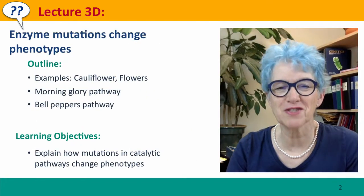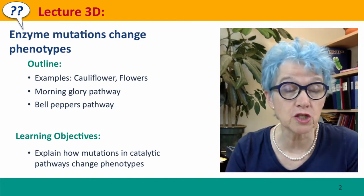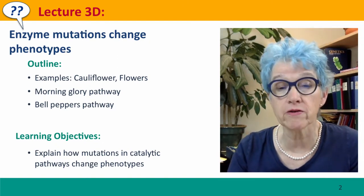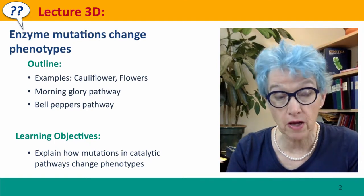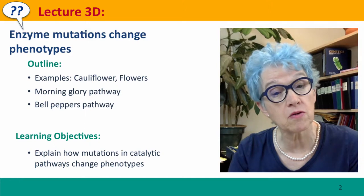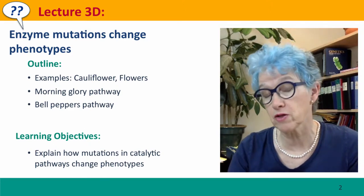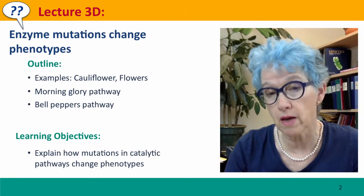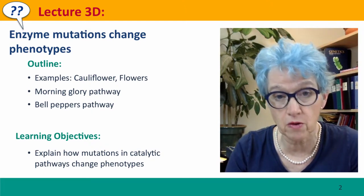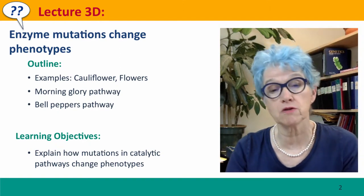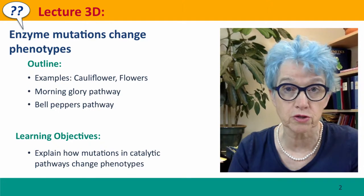Hi, everyone. Welcome back to Useful Genetics. This is lecture 3D, where we're talking about the relationships between enzymes and phenotypes. We'll talk about examples of cauliflowers, examples of flowers. We'll look at a couple of biochemical pathways that affect things you probably see all the time — one is the blue pigments of morning glory flowers, and the other is the colors of peppers that we can buy in the supermarket.